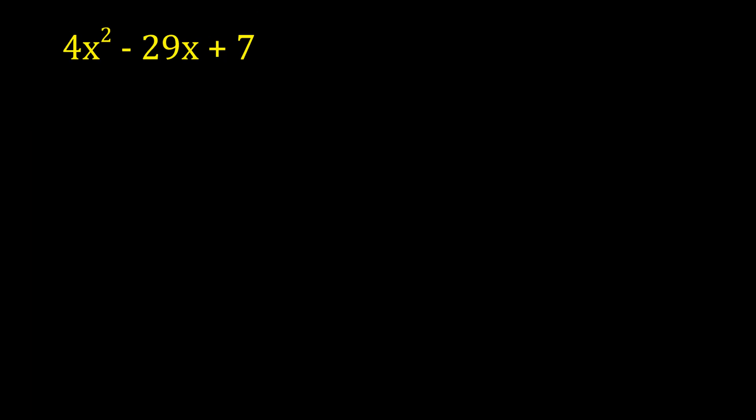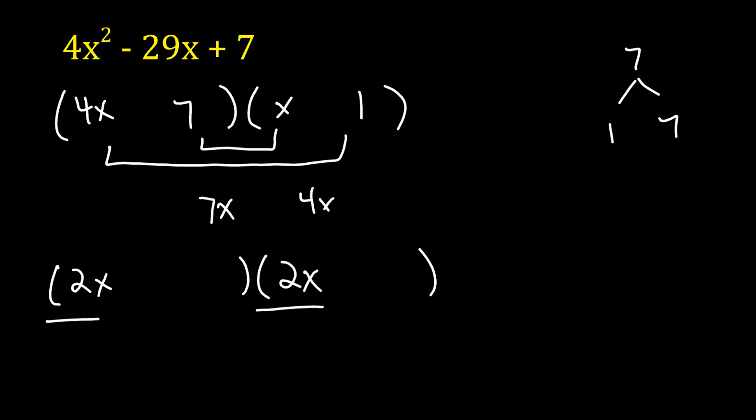Number 4 here. So this one is not a slam dunk. We don't know if this is 4x and x or if it's 2x and 2x. We're going to have to do a little bit of guess and check. But the nice thing is they gave us a number that's prime. So 7 is 7 and 1. There's really only one combination. It's just does the 7 go here and the 1 go there or vice versa.